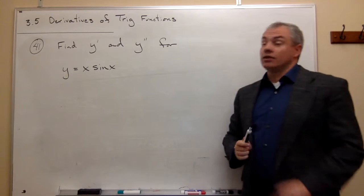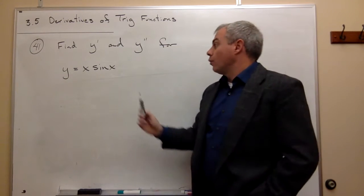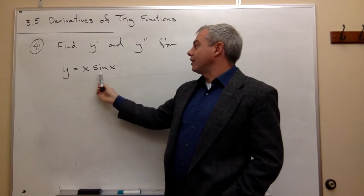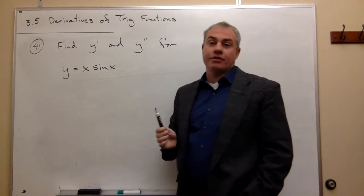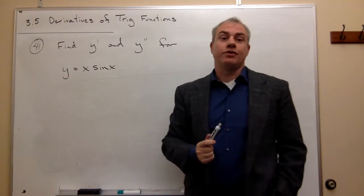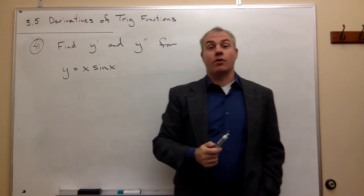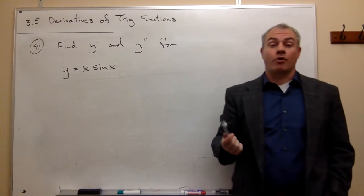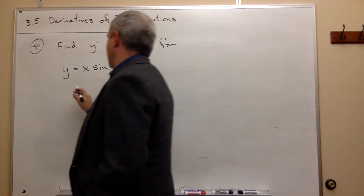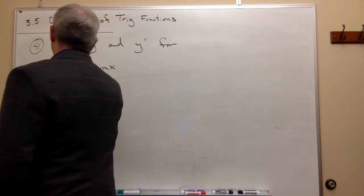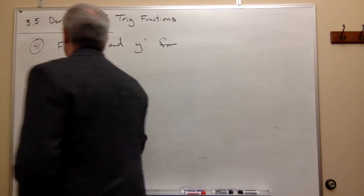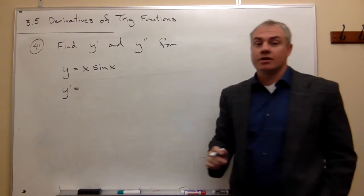Let's start out with the first derivative. What I notice right off the bat is I've got a function times a function here — the product of two functions — so we need to use the product rule to take its derivative. To find y prime, we need to use the product rule.